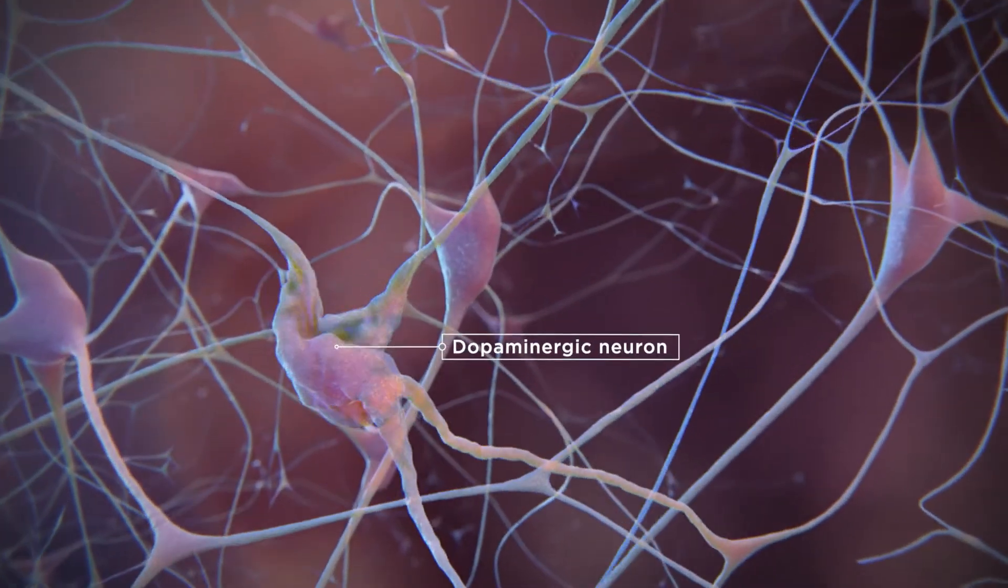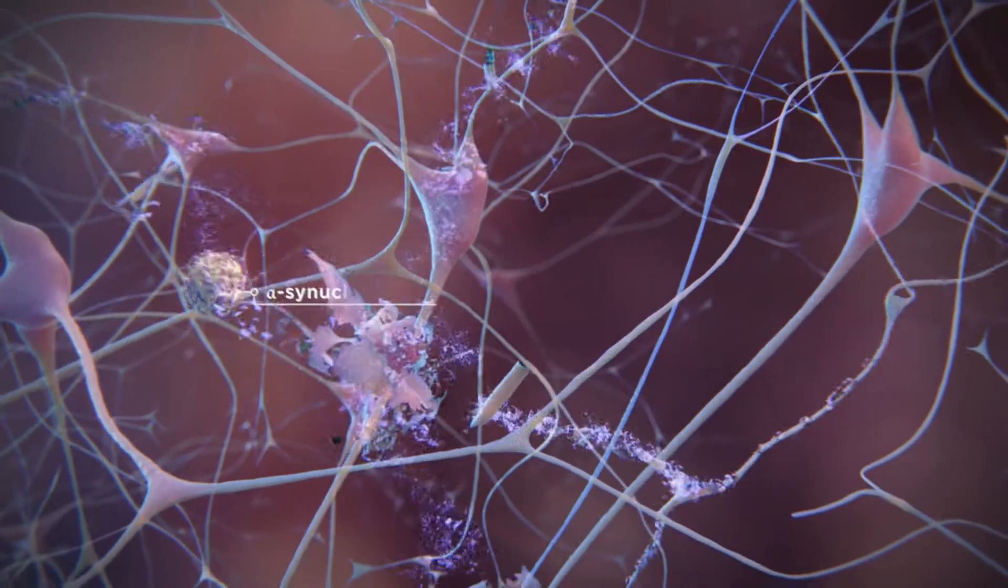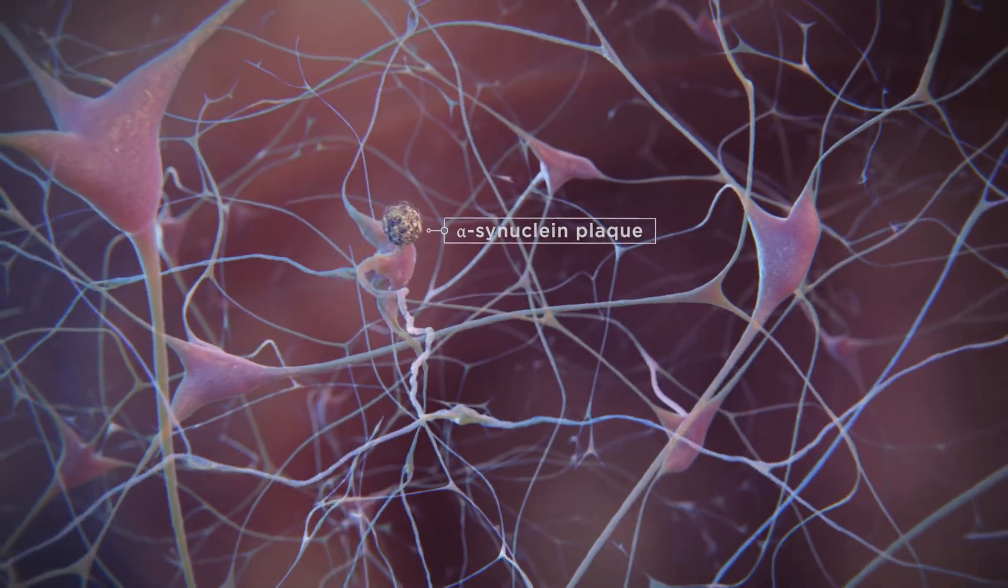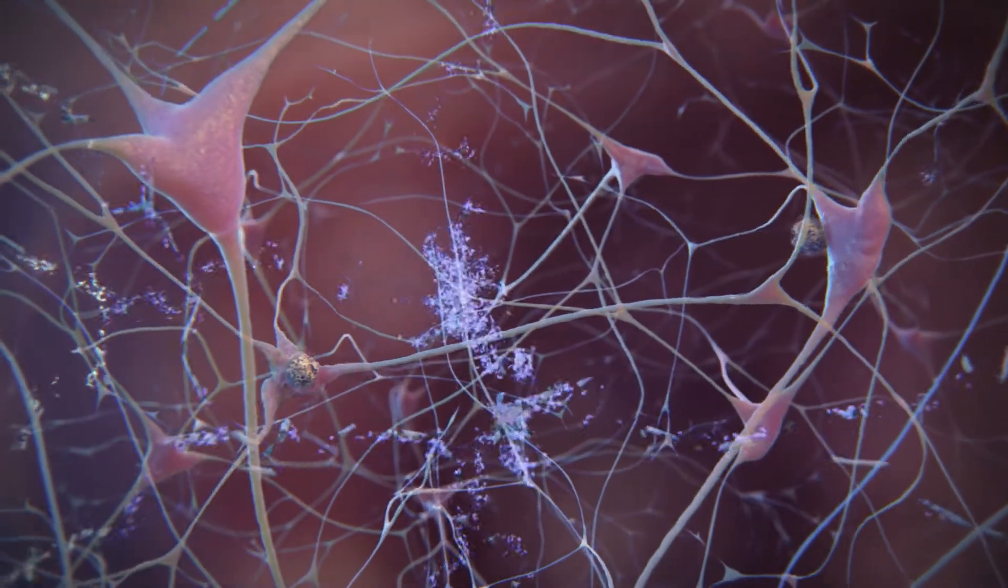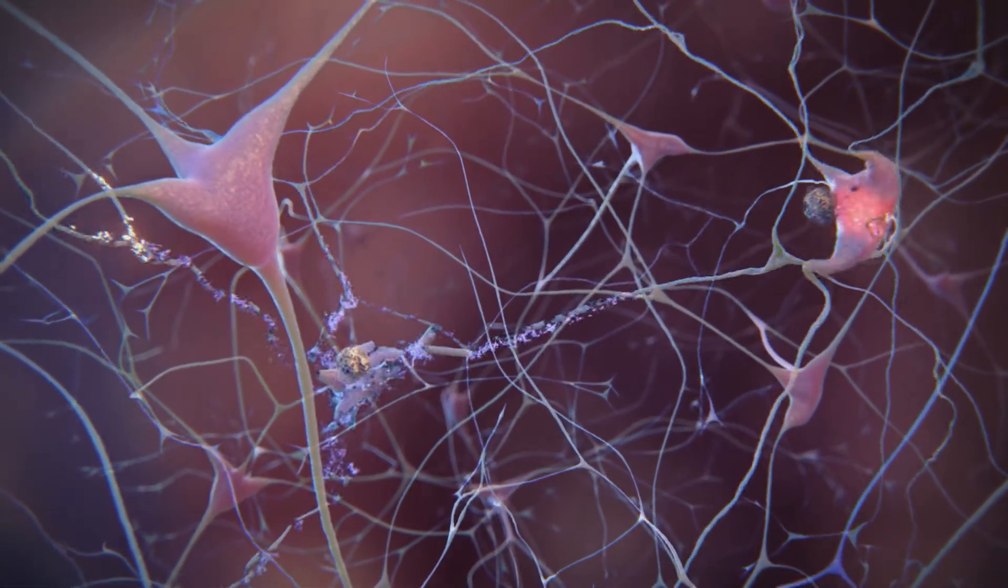Within the brain's dopaminergic neurons, abnormal protein aggregation of alpha-synuclein can form, resulting in neurotoxicity and the development of PD. Inhibiting the spread of alpha-synuclein is key to treating PD.